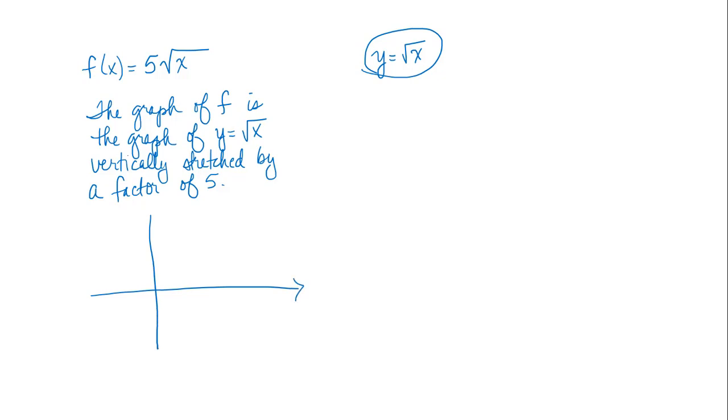And so 5 times the square root of x would tell us that the graph of f is the graph of this basic square root function vertically stretched by a factor of 5. So in fact, to get the graph, if you think about what the output values are for the square root function, like (0, 0), (1, 1), (4, 2), we'll just look at those.